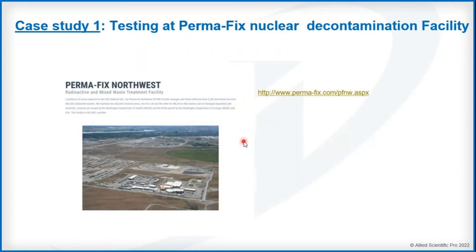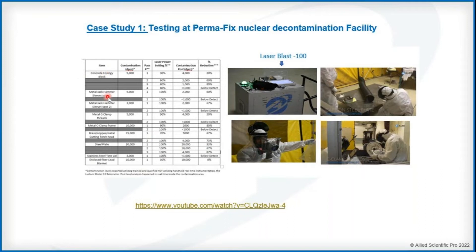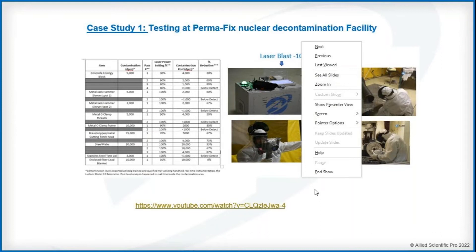Our first case study is testing at the Perma-Fix Nuclear Decontamination Facility in Richland, Washington, done back in 2017. They deal with low and medium radioactive waste. We took our 100W laser system there — they defined an area under negative pressure with the box kept outside. Our engineer stood near the box adjusting parameters while the laser head was routed through the negative pressure area. Technicians at the Richland Washington facility performed the laser cleaning while a radiation technician measured before and after. Several items were cleaned including concrete blocks and metal objects.